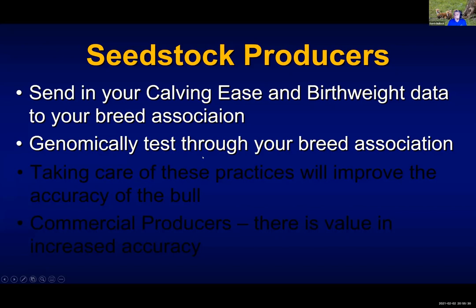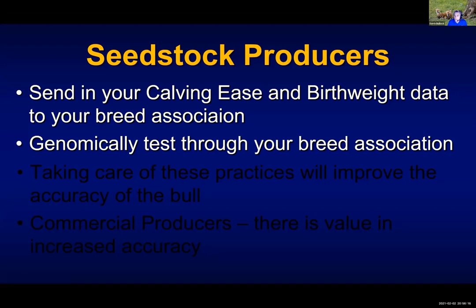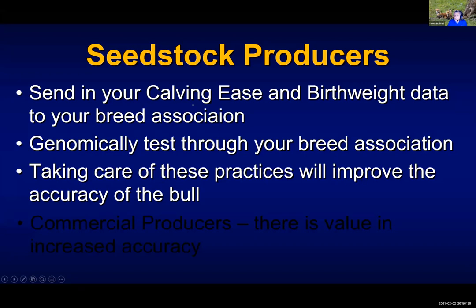I highly encourage you to genomically test through your breed association. This has become extremely important — the technology has matured to the point where it's very beneficial. If you have your bull genomically tested, it will actually be the same as if you have bought that bull and he has had about 25 calves with good calving ease data. Just doing a simple genomics test on that bull gives us the same amount of information as raising that bull, breeding him to the cows, and getting that much data back. It really advances us about two to three years over what it would take to get that level of accuracy the traditional way.